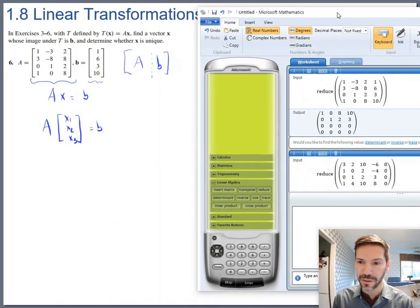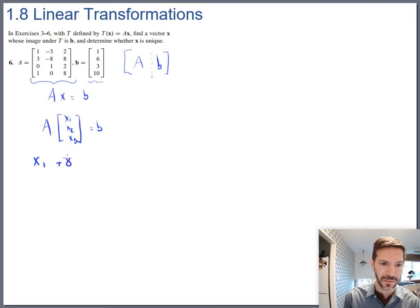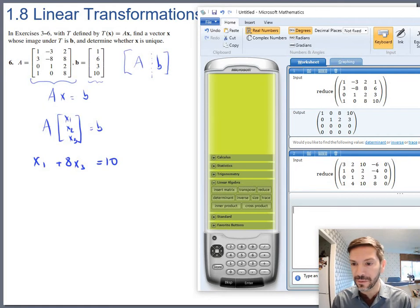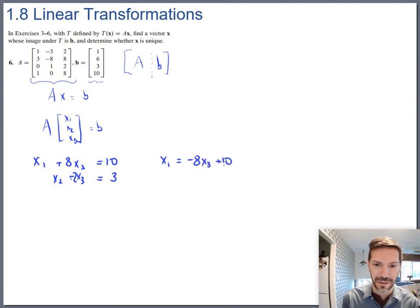Let's write down the infinitely many and then we'll pick one of them. So it's 1, 0, 8, 10. So there's my 1, 0, 8, 10. And then I had 1, 2, 3. Our free variable was x3. So as we solve these we'll get x1 is negative 8 x3 plus 10, x2 is negative 2 x3 plus 3 and x3 is free.